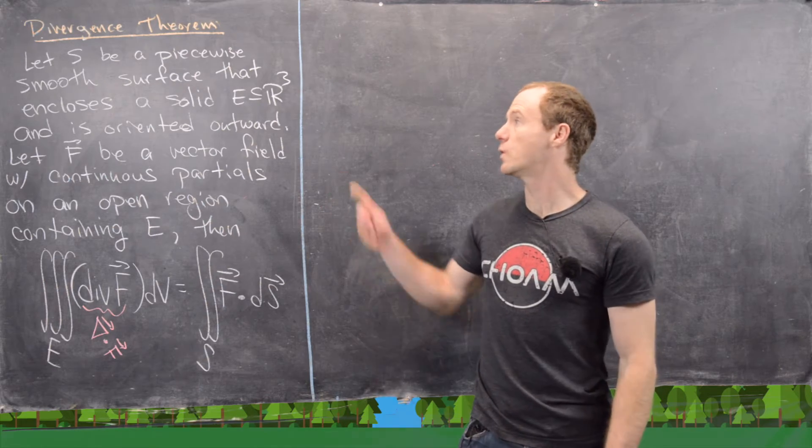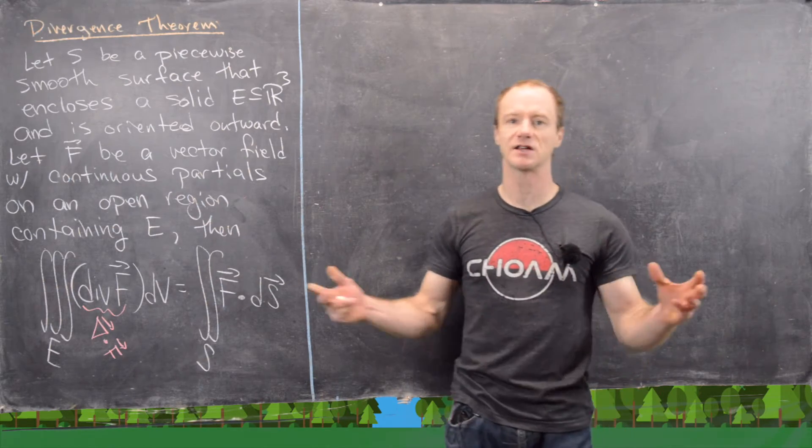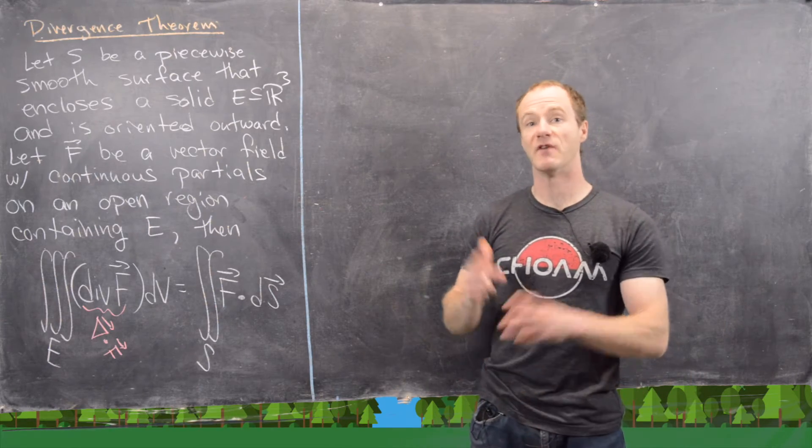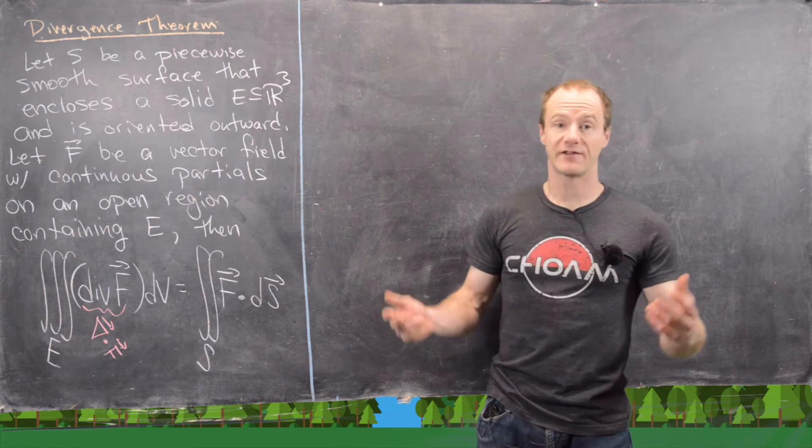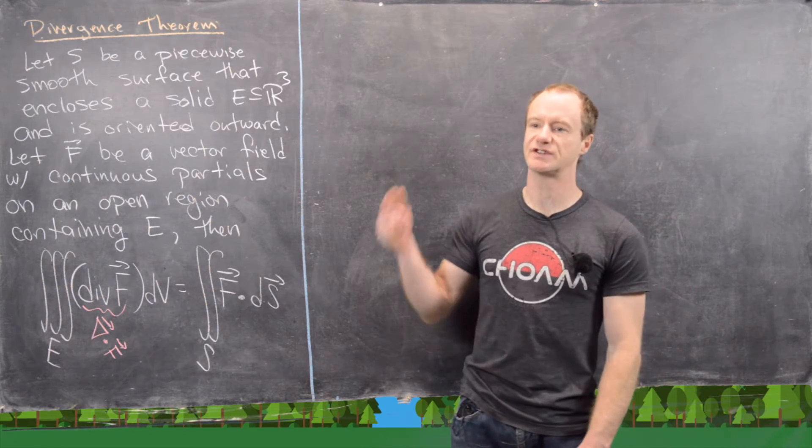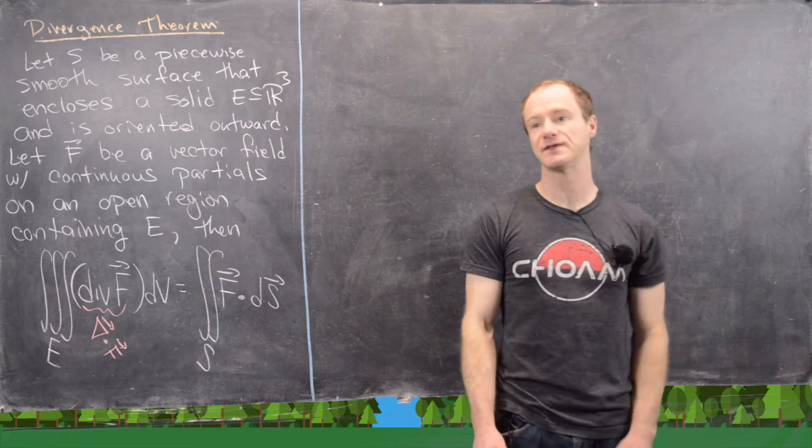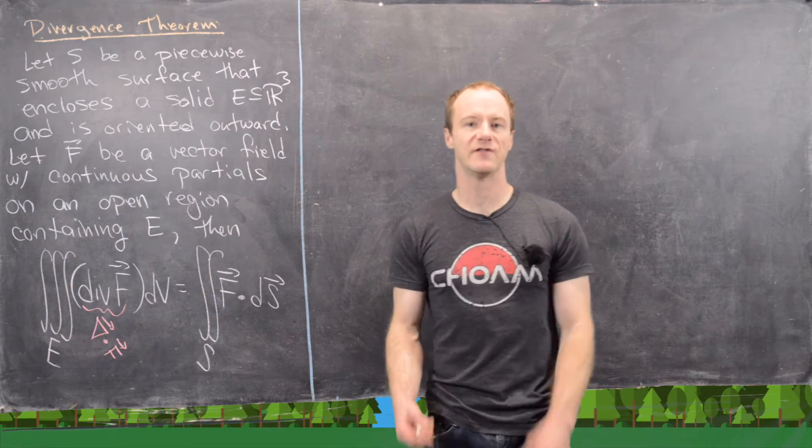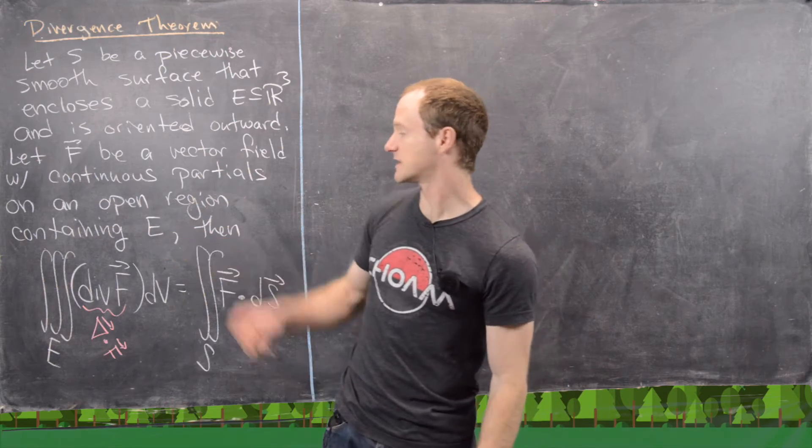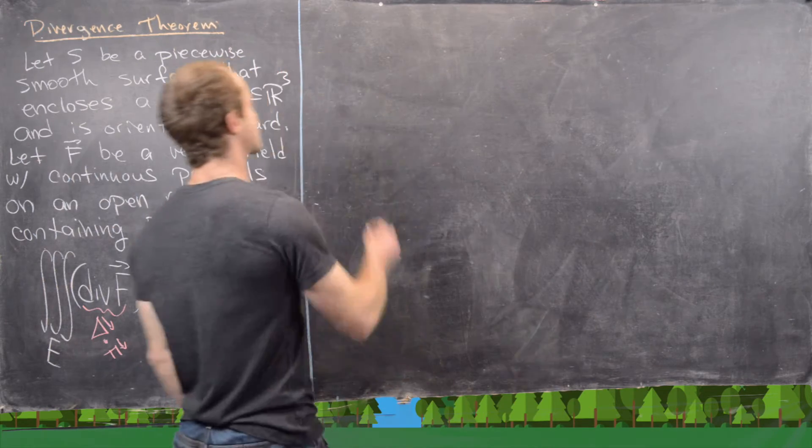We want to look at a proof of this, but not a super general proof because that's kind of outside of the scope of a normal multivariable calculus class, like a sophomore level multivariable calculus class, which is who the intended audience of these videos is. So we'll look at a very special case of the proof, and that very special case is where this region E is just a box.